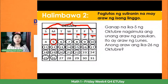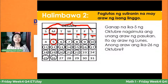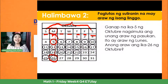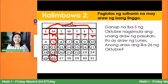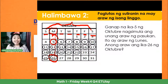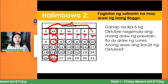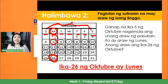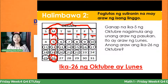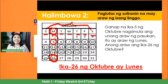Sa pamamagitan ng pagbilog ng araw, nakita natin na ang ika-26 ng Oktobre ay Lunes din. Yung October 5 at yung October 26 parehong nakatapat sa Lunes. Marunong na tayong gumamit ng kalendaryo — ganyan lang ang paggamit ng kalendaryo.